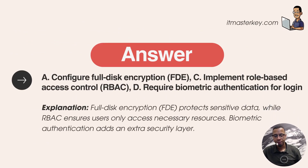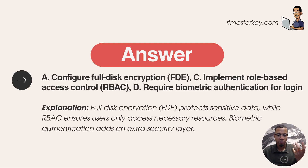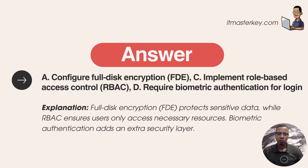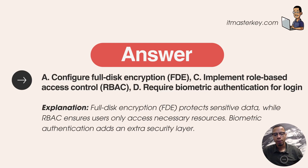The correct answers are A, C, and D. A — configure full disk encryption — means encrypting the entire hard drive. C — implement role-based access control — means people with certain roles have specific permissions to perform certain tasks. D — require biometric authentication for login — means using something biologically part of you to authenticate, such as an iris scan, fingerprint scan, or voice recognition.